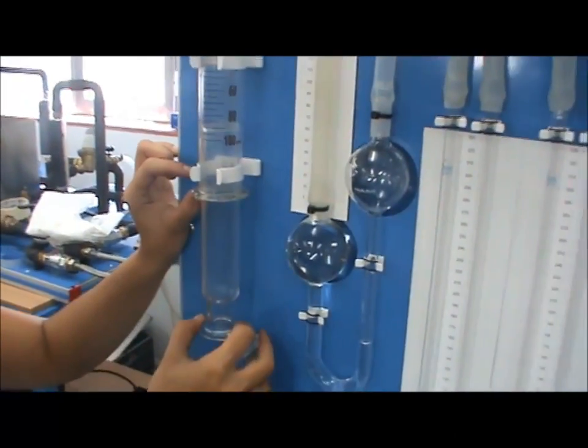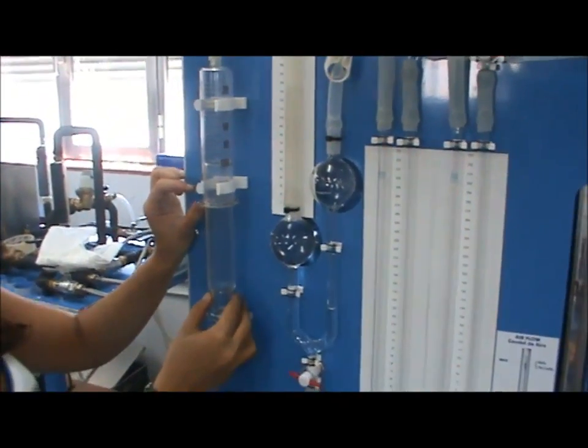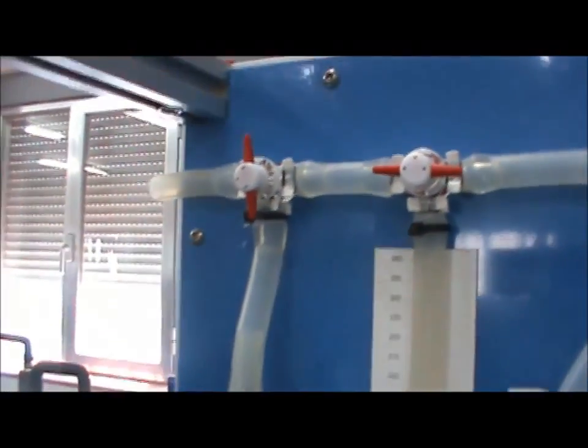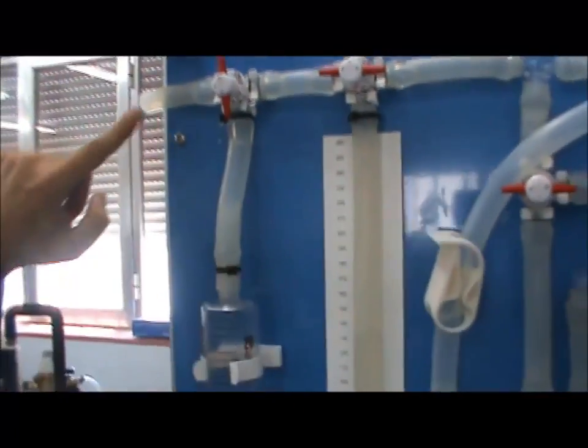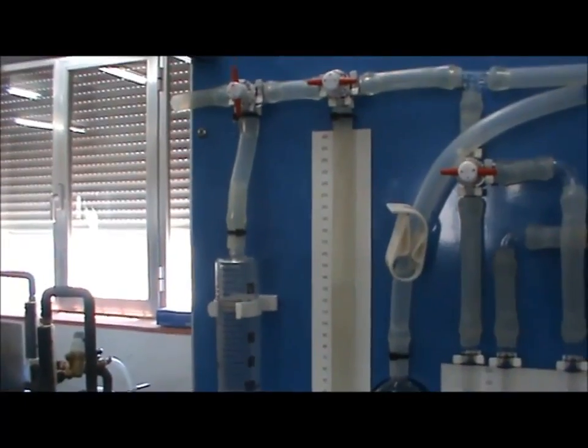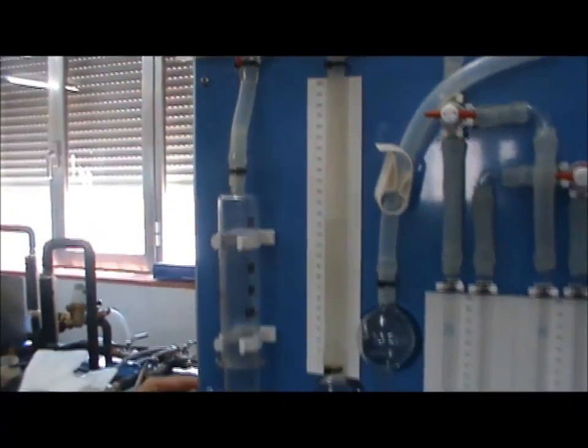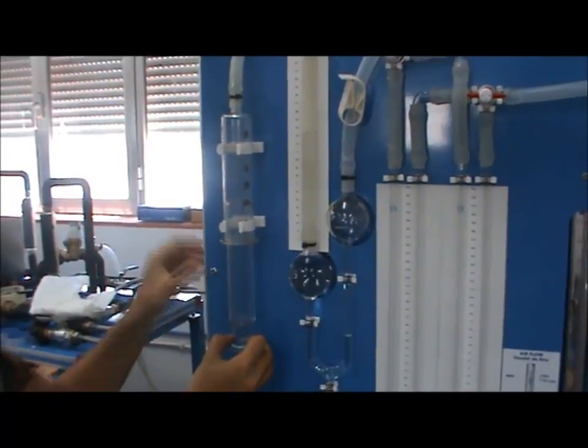Now, push the plunger down, drawing the air mixture from the column into the syringe. Turn valve VT3 to expel the sample to the atmosphere. Repeat these steps 5-6 times to clear the lines, and to ensure that the sample is representative of the mixture in the column.